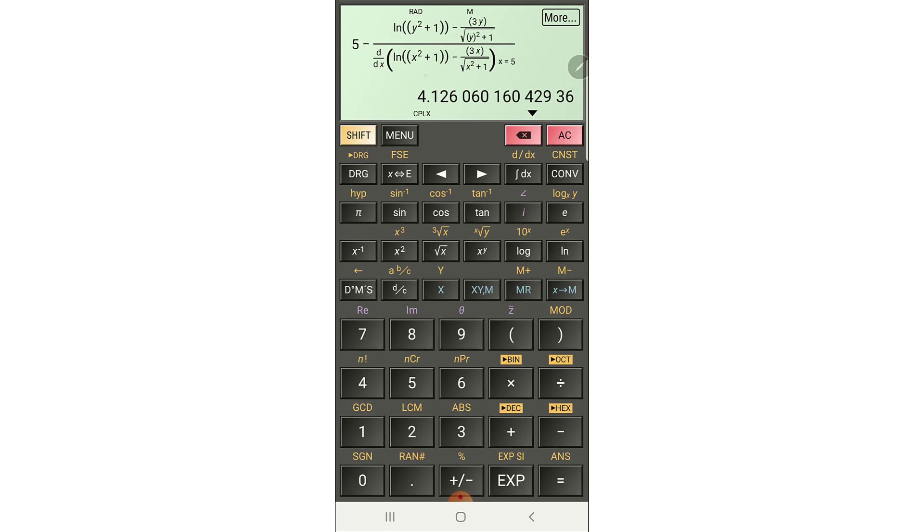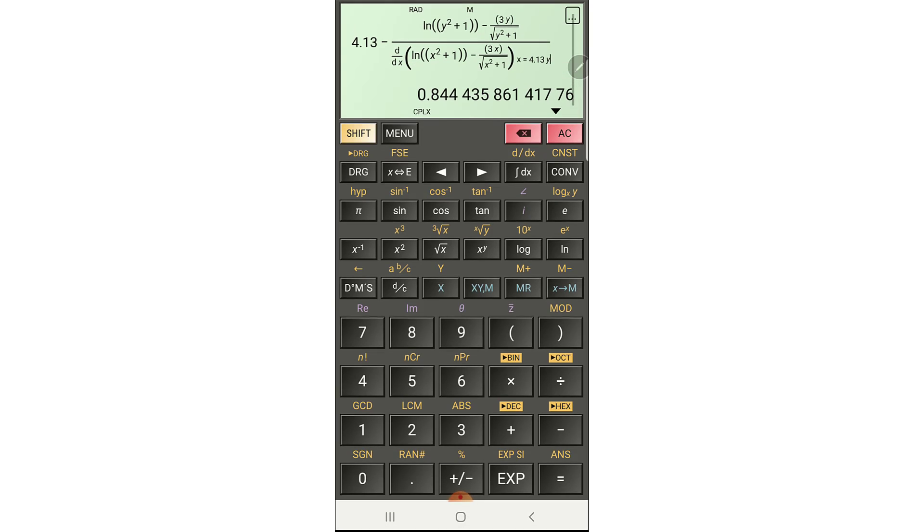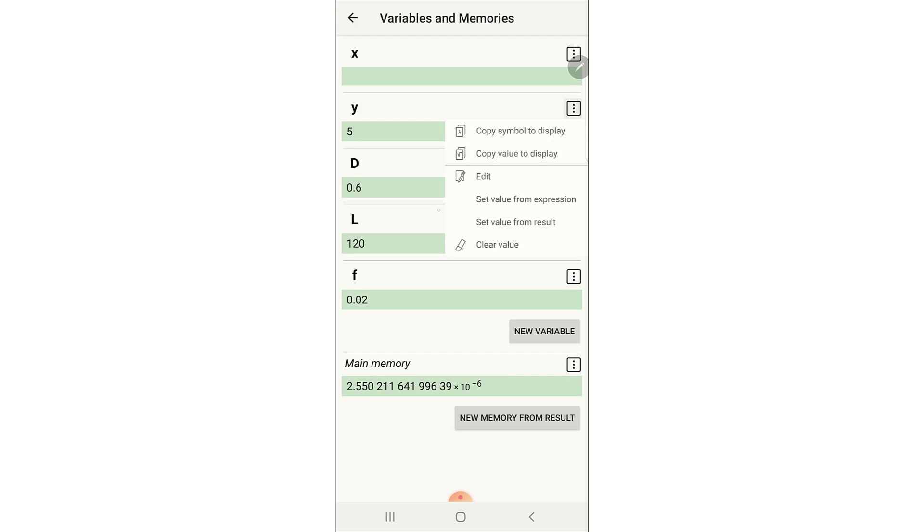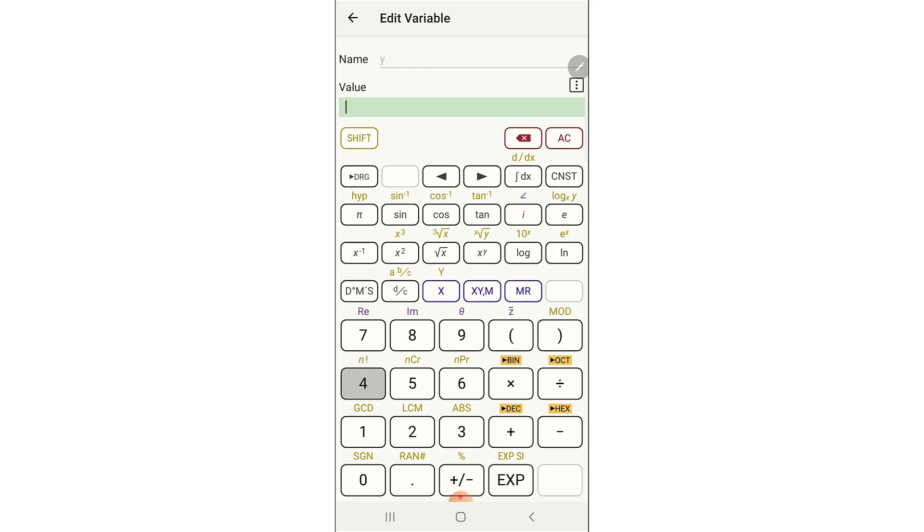And remember that the initial guess is 5 so I just edit the initial guess and put 5 here. Okay this is the answer 4.13, let's consider two decimal figures 4.13, that's the result of the first iteration so I put 4.13 here. For the derivative I put 4.13 and for the numerator y, 4.13.